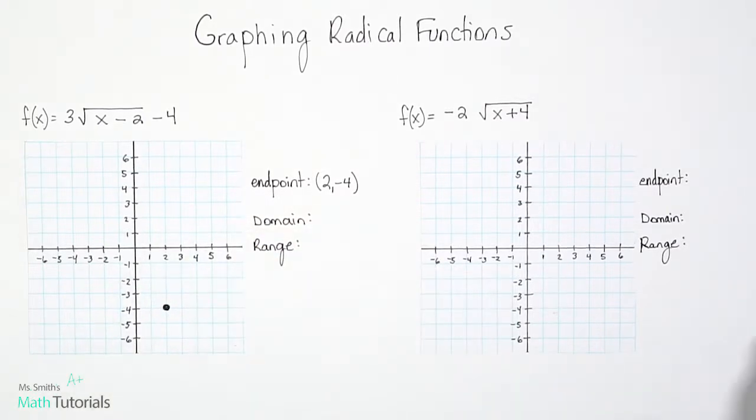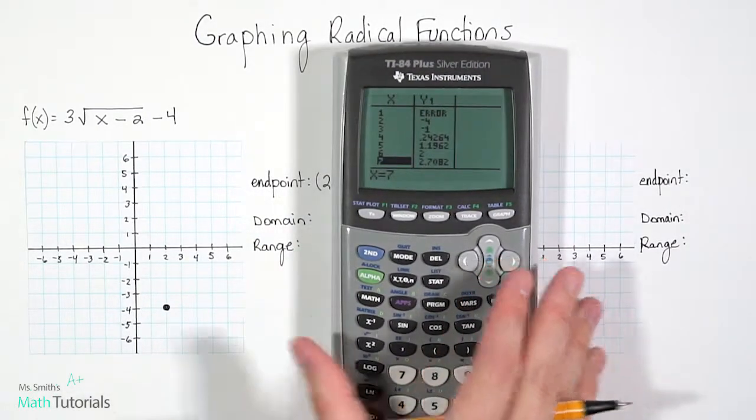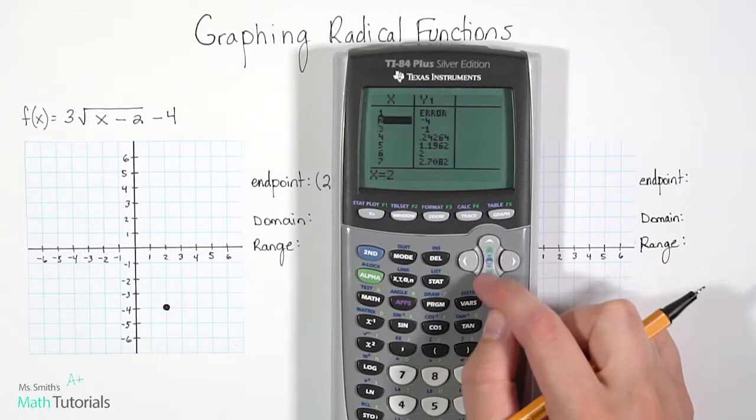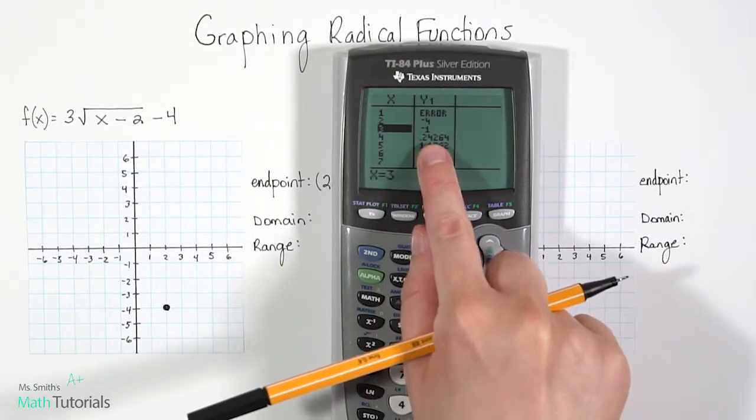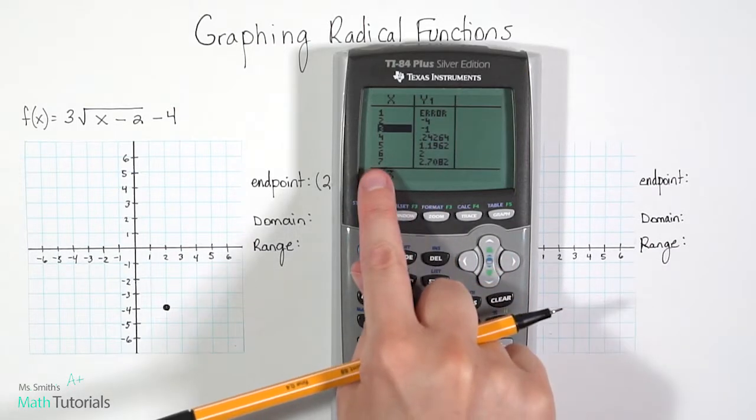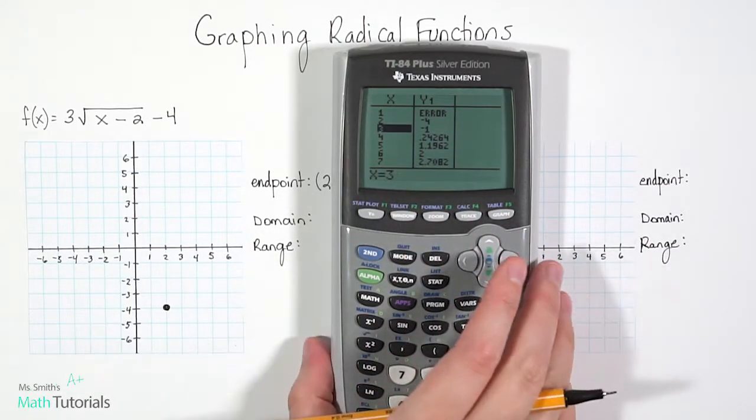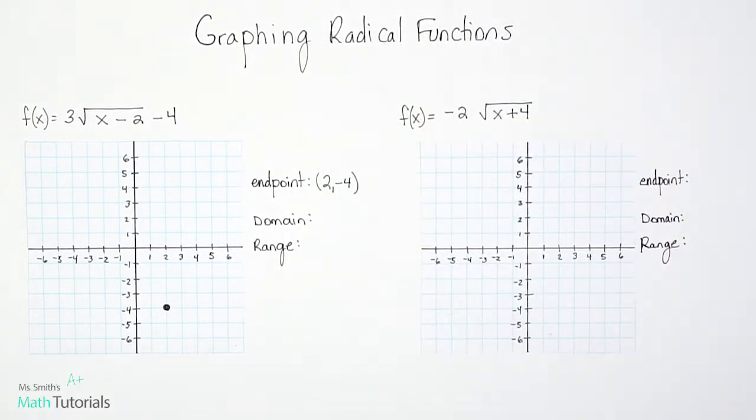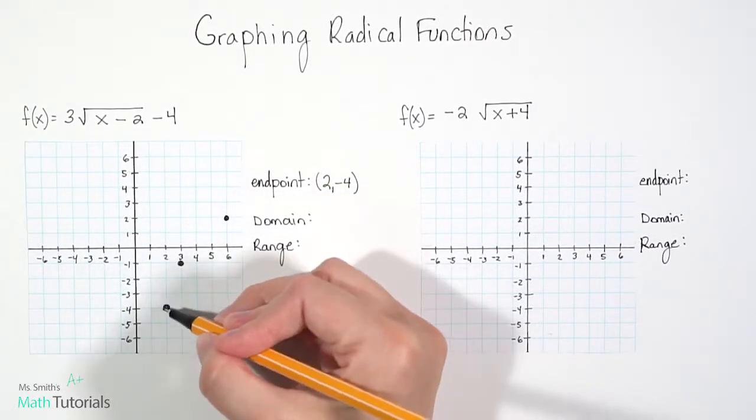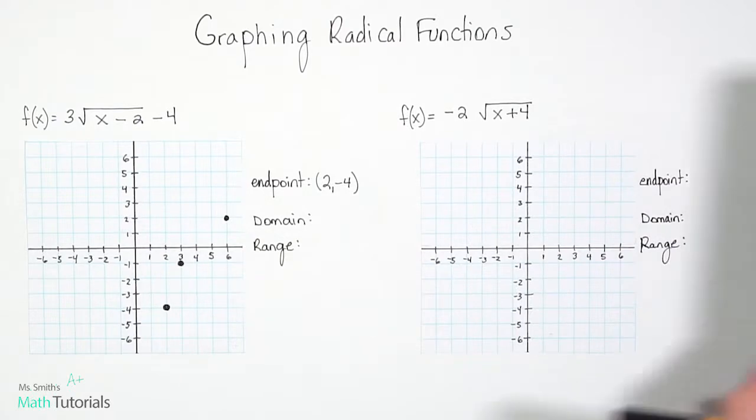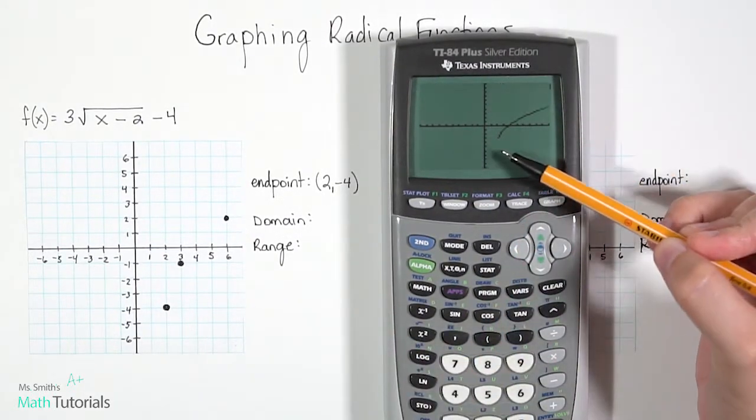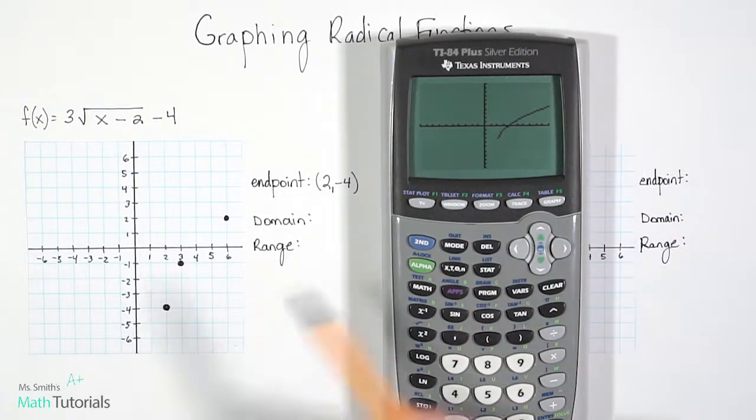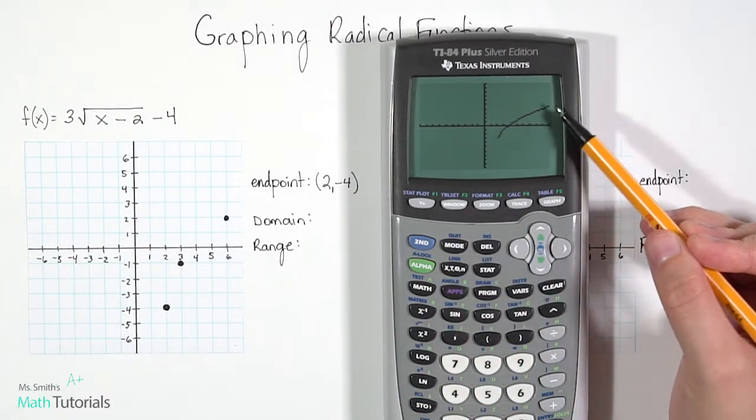But then we need to plot more points. So let's look at our table again. So I got the 2, negative 4. What's my next whole number of points? I've got a 3, negative 1. I can plot that as well as 6, 2. I can easily plot that. So let me do those. And now I'm out of space. So I want to go ahead and connect these. If you notice, you can also hit graph just to see generally what this is going to look like. It's going to start here at our endpoint, and then it's going to go up and out forever.